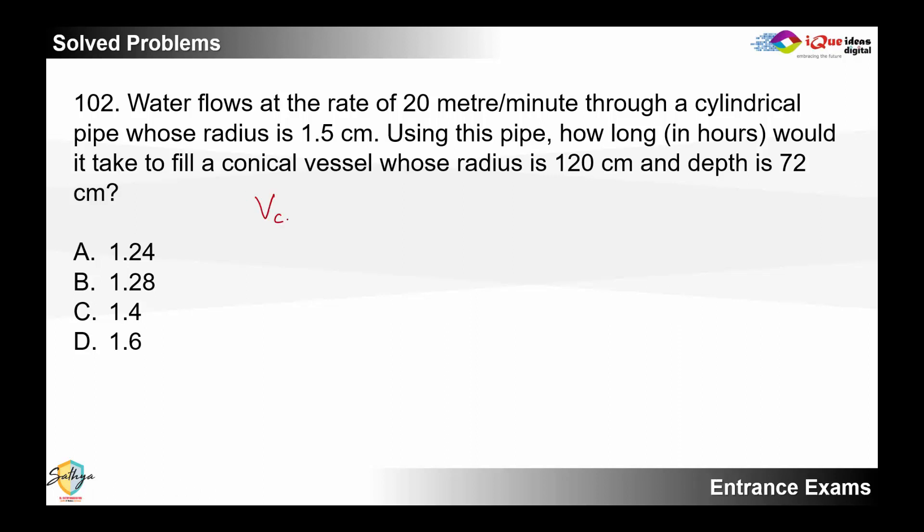The volume of a cone is given by the formula one third of pi r square h, so this is pi upon 3 into radius is 120 square and the depth is 72. I do not simplify, I keep it as it is.